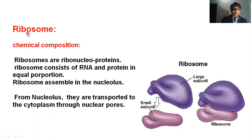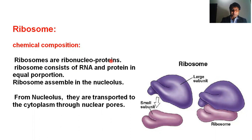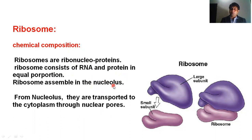So let's discuss what ribosomes are called. As I mentioned regarding chemical composition, ribosomes are composed of equal amounts of RNA and protein. Because they consist of RNA and protein, ribosomes are called nucleoproteins.